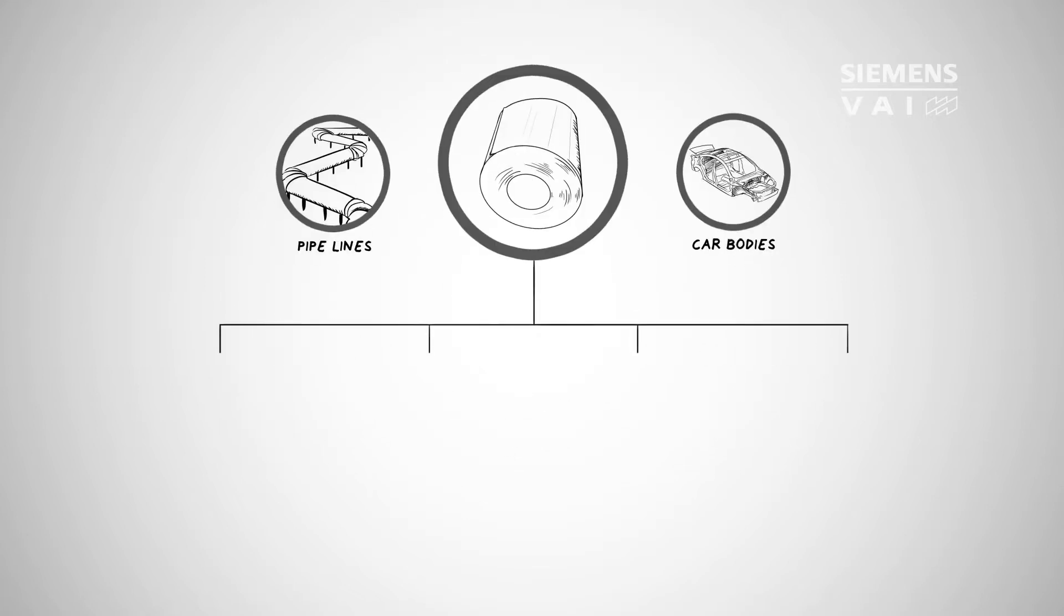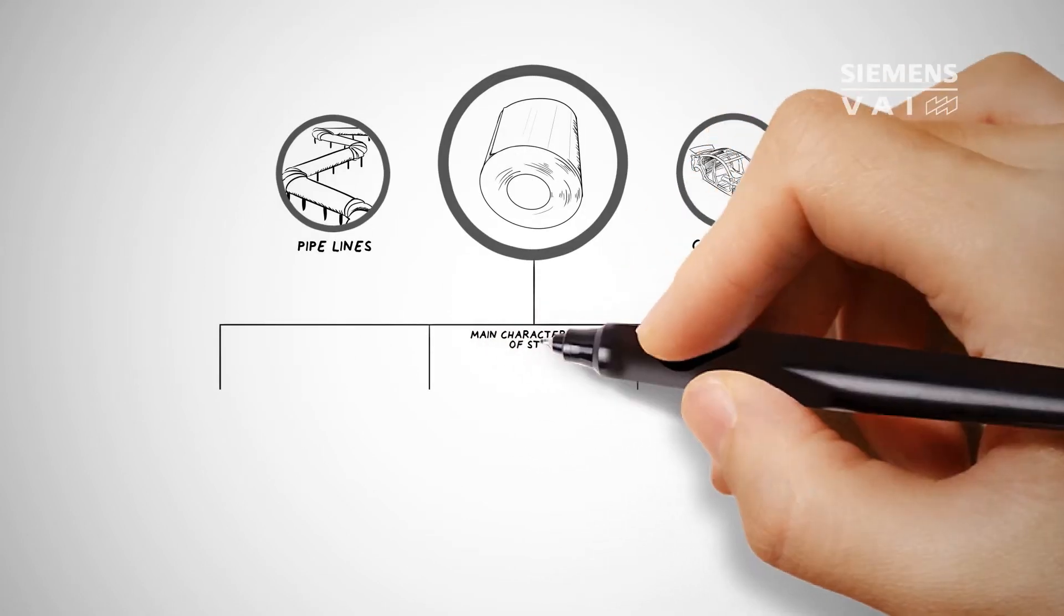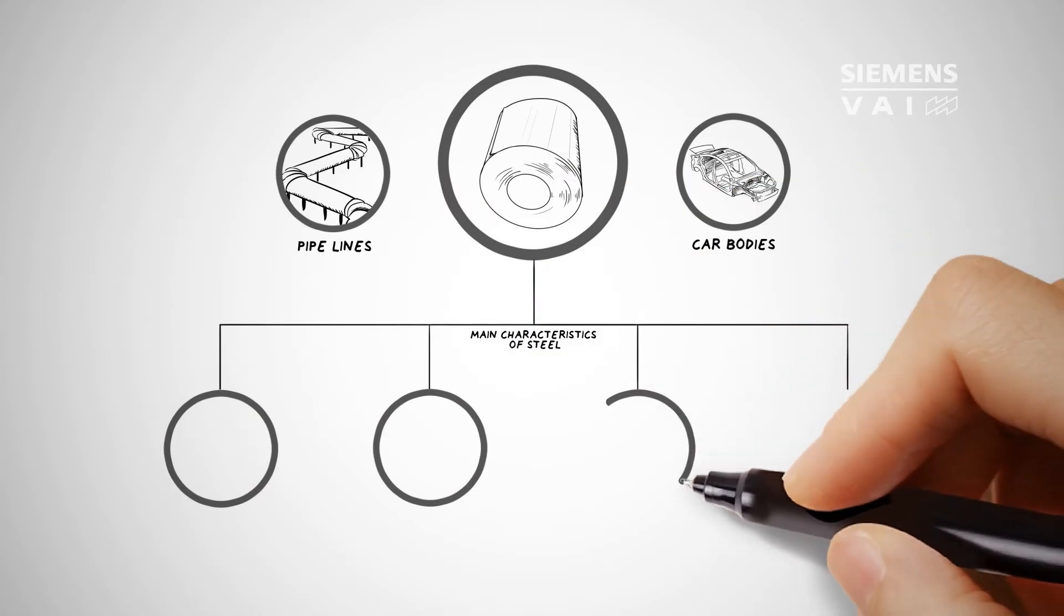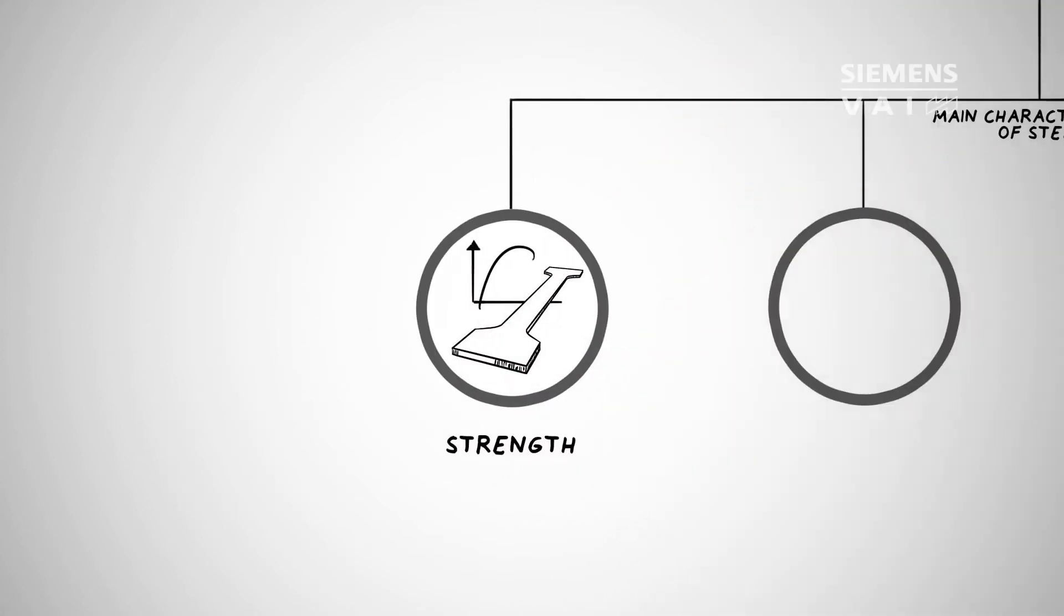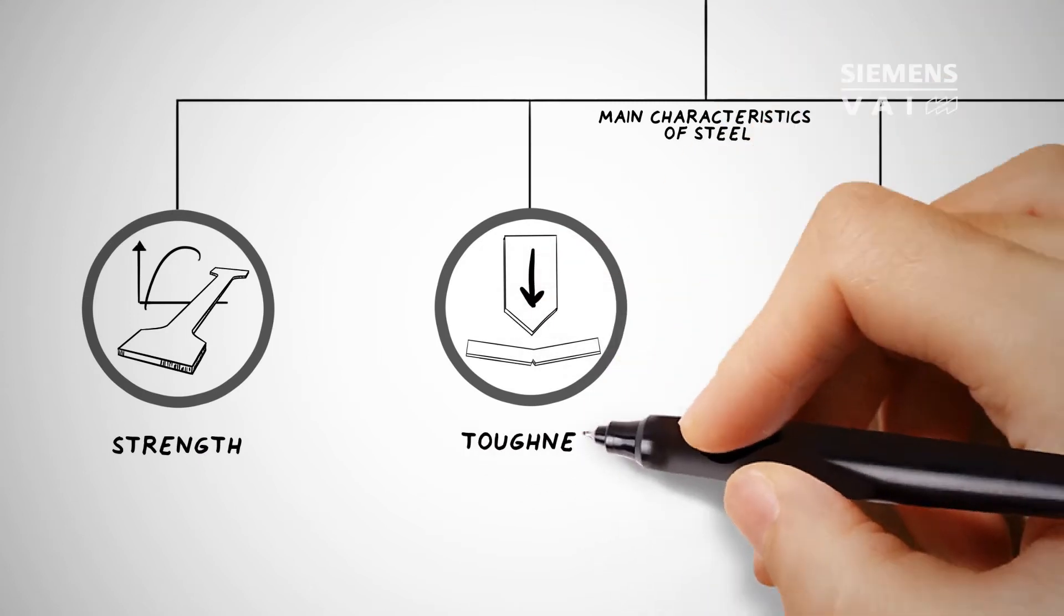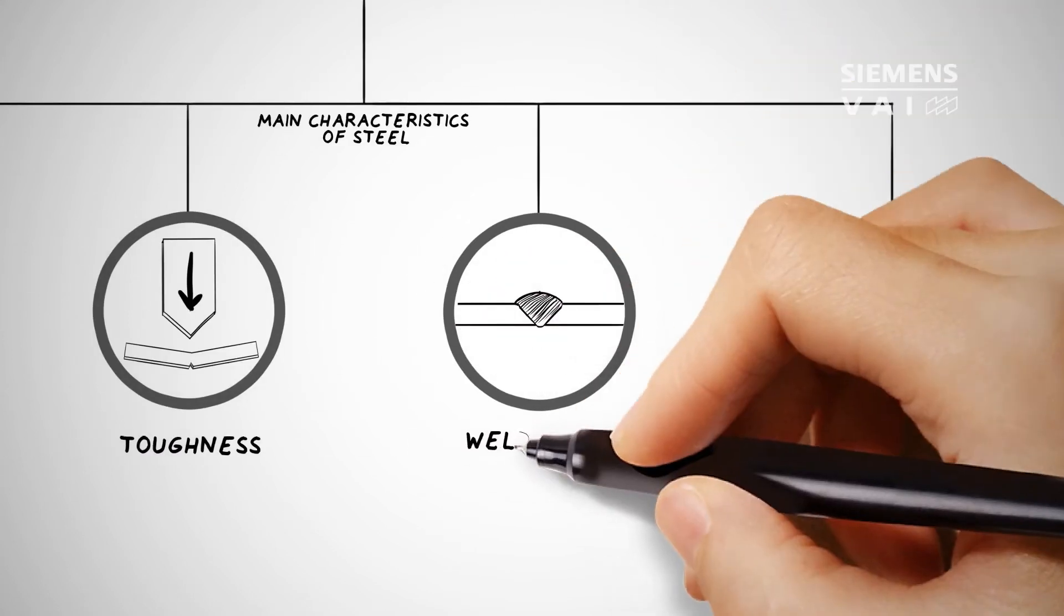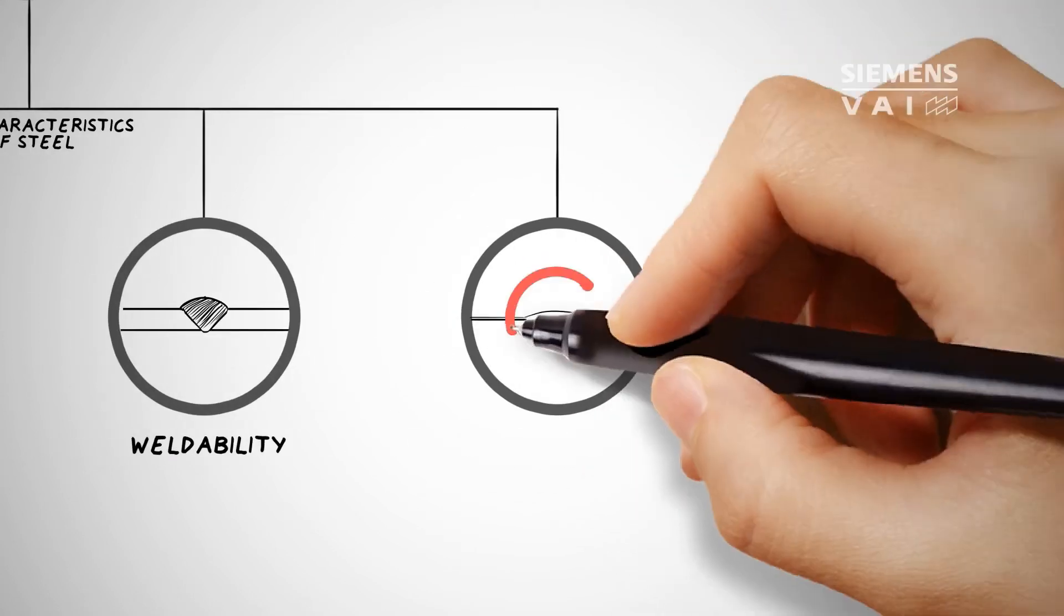But firstly let's have a look at what primarily defines API and HSLA steels. Basically the most important characteristics of steel are strength, toughness, weldability and corrosion resistance.